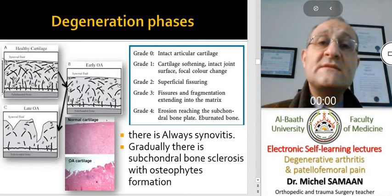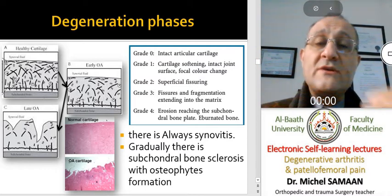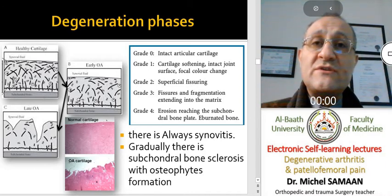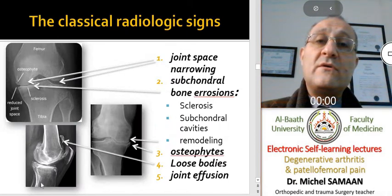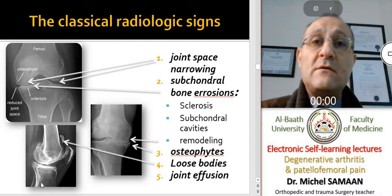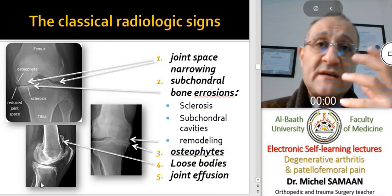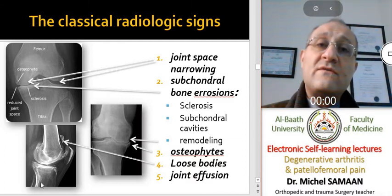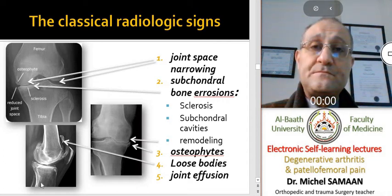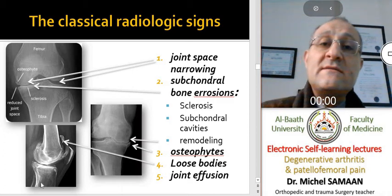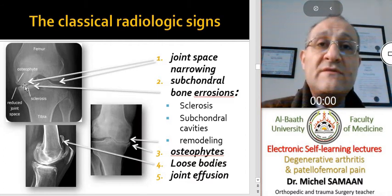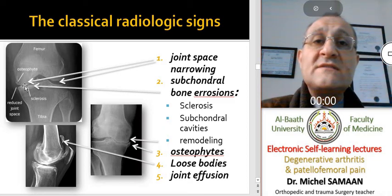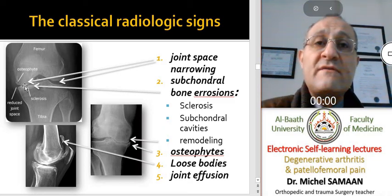This synovitis is usually responsible for the pain. Within the degenerative process we can also see subchondral bone sclerosis and osteophyte formation. If we understand the mechanism of degeneration, we can understand the radiological signs. The first radiological sign is joint space narrowing, which results from the decrease in thickness of the cartilaginous layer due to erosions and liberation of cartilaginous particles.